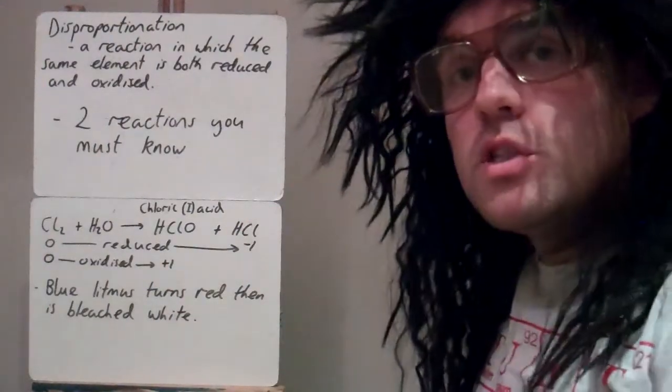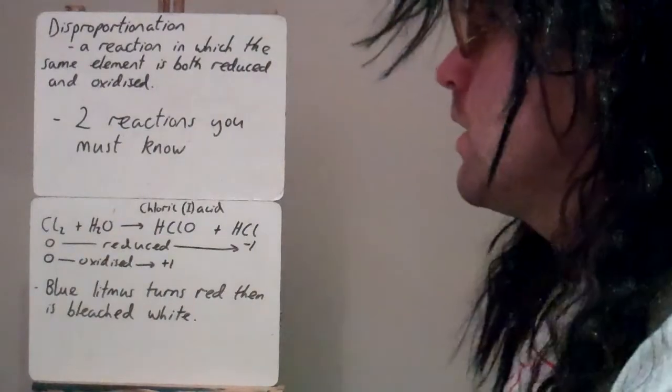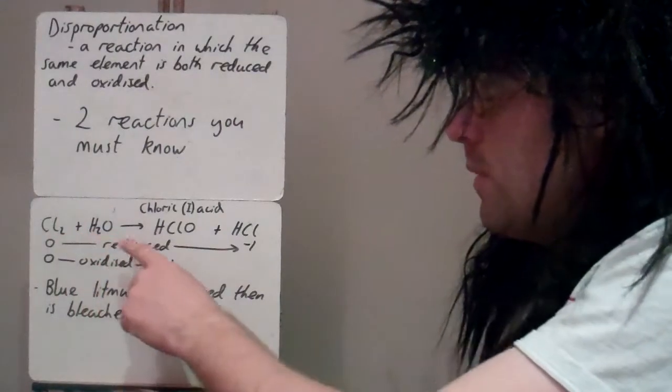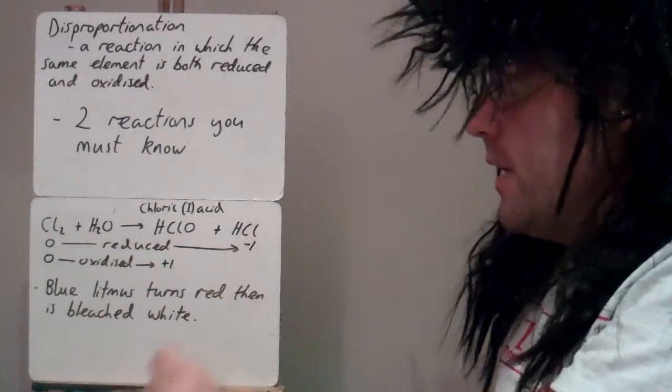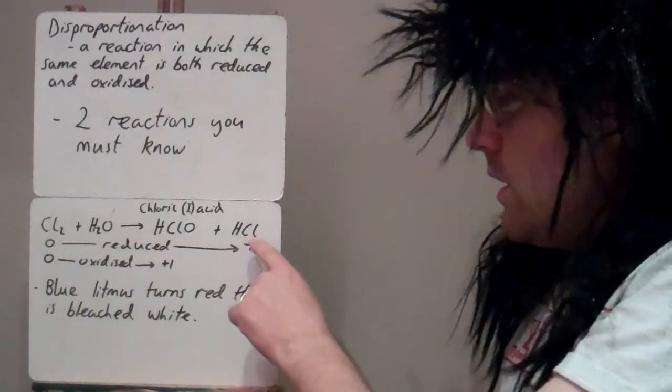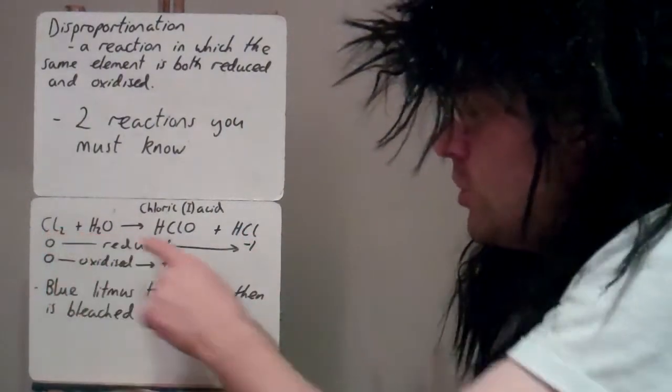There are two reactions that you must know for your course. The first one is putting chlorine into water. Chlorine reacts with water to make chloric-1-acid and HCl. The chlorine starts off with oxidation number zero, and then in the HCl it's minus one, so the chlorine's being reduced.